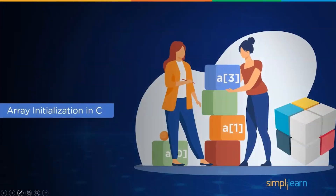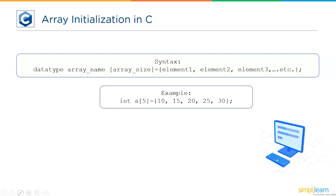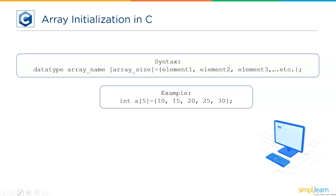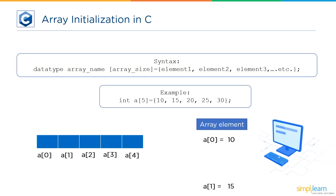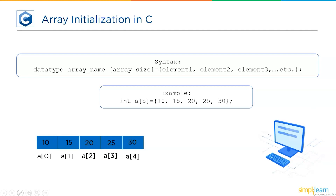Next, we have array initialization in C. One way of initializing array elements is during the declaration. The syntax is: data type, followed by array name and size, then using the assignment operator '=', list out the elements separated by commas inside curly brackets, ending with a semicolon. For example: int a[5] = {10, 15, 20, 25, 30}. The memory is allocated after the array declaration, and the elements 10, 15, 20, 25, and 30 are assigned starting from index a[0], then a[1], and so on till a[4].